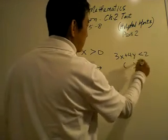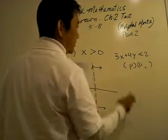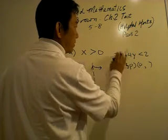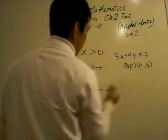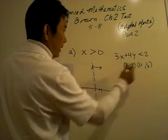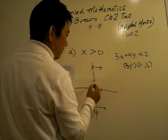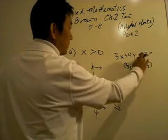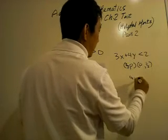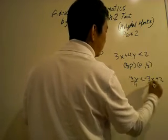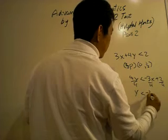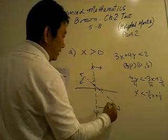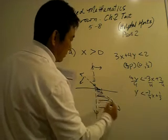Let's use the intercept method. Plug in zero for y: x equals two-thirds. Plug in zero for x: y equals two over four, which is one half. So two-thirds comma zero is right here, and zero comma one-half is right there. It's a dashed line. Solving for y: 4y is less than negative 3x plus 2, divided by 4 on both sides, giving y less than negative three-fourths x plus one-half. Since it's less than, we shade the bottom side. The solution region is right there.